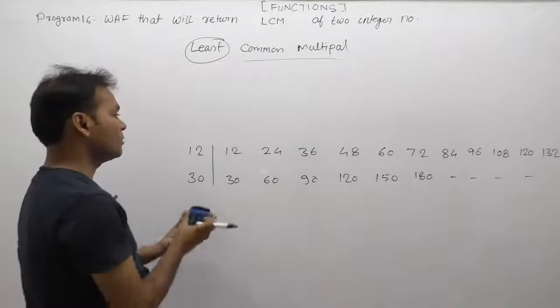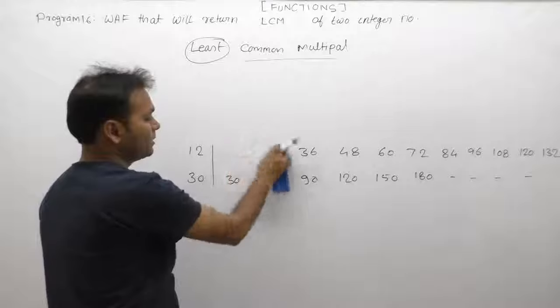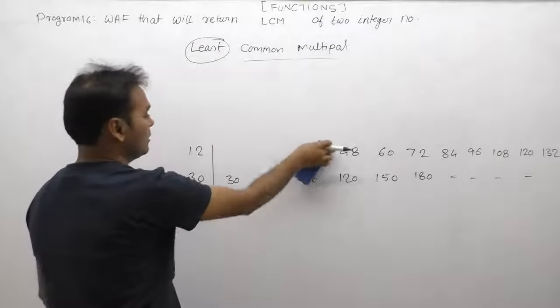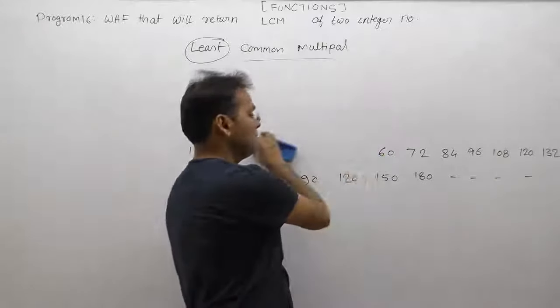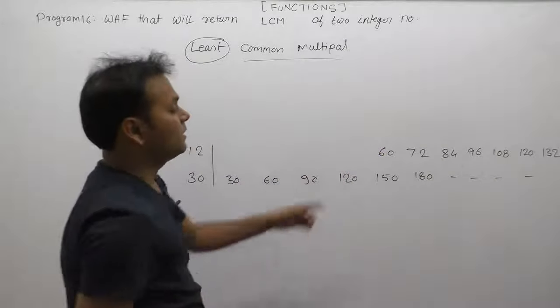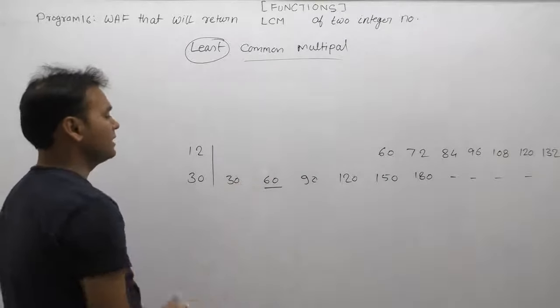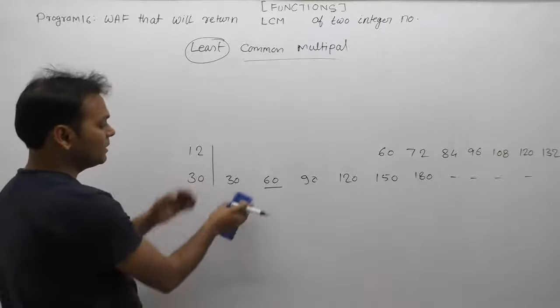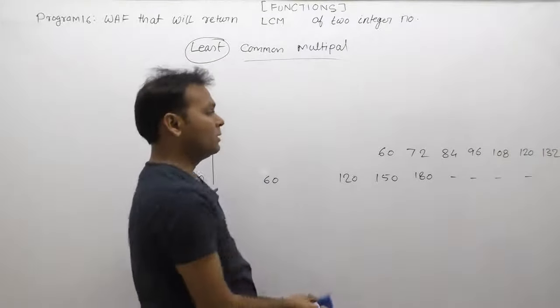24 is not a common multiple, 36 is not a common multiple, but 60 is a common multiple. 60 is divisible by both 12 and 30. Similarly, 120 is also a common multiple.